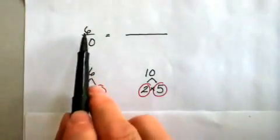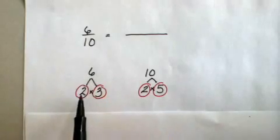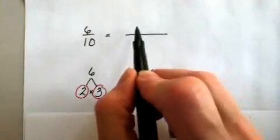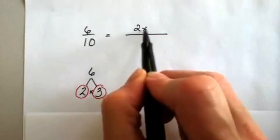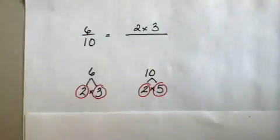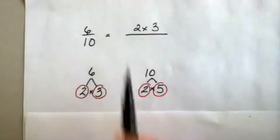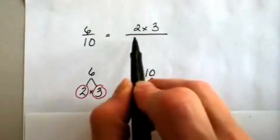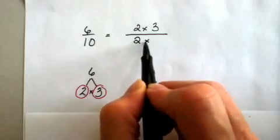appropriate place. 6 was in the numerator, so 2 times 3 I place in the numerator. 10 is in the denominator, so 2 times 5 I place in the denominator.